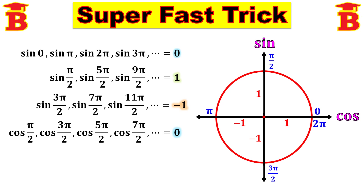For cos on the positive side, we have the angles 0, 2 pi, and after rotation 4 pi. That means cos 0, cos 2 pi, cos 4 pi, etc. — for all these, the value is 1. That is: cos(0) = 1, cos(2pi) = 1, etc.